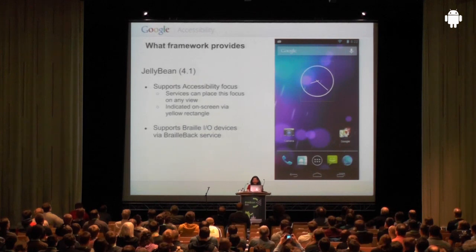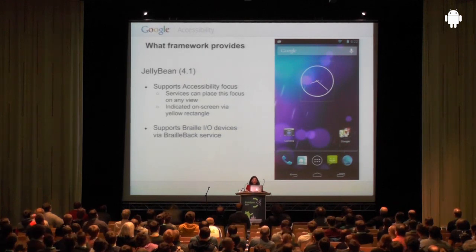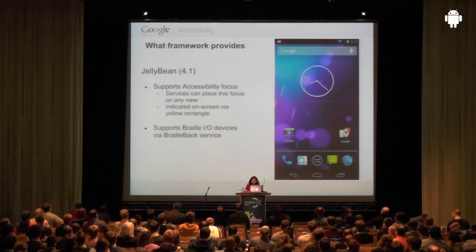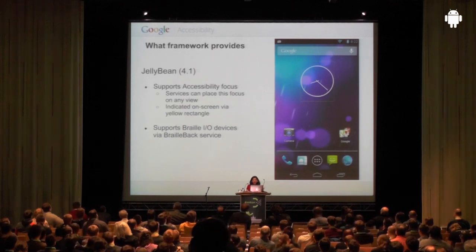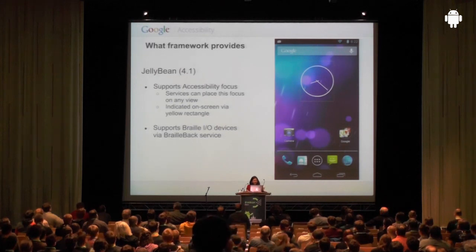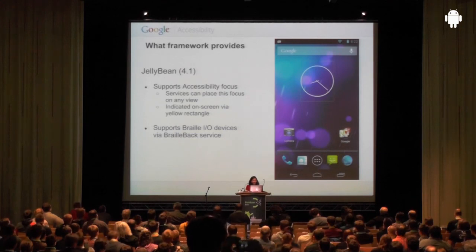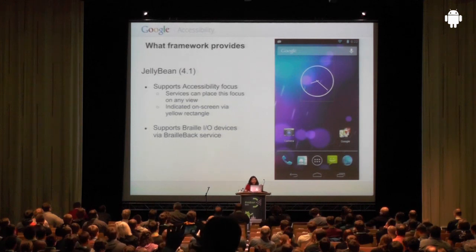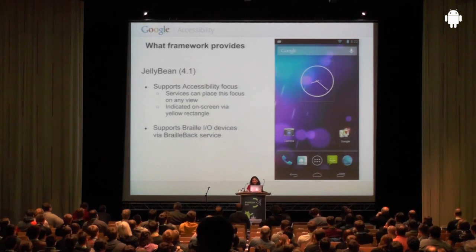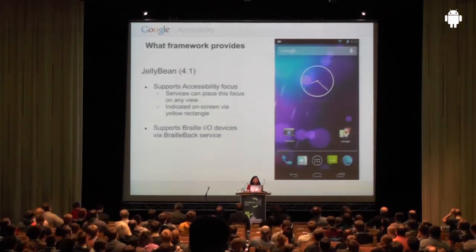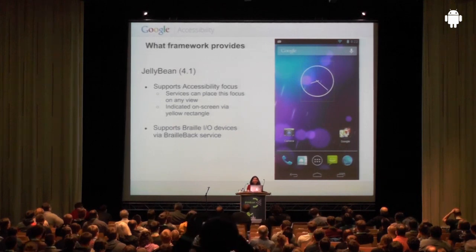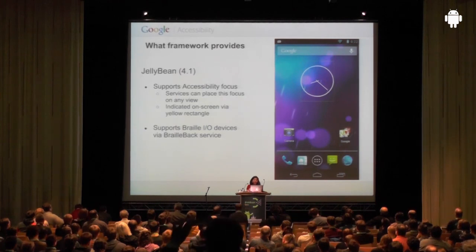Jellybean added a concept called accessibility focus — something like a cursor that can move around the screen, provided by the system to every view element. Previously you had to make elements focusable manually; going forward the system provides accessibility focus to all view elements automatically. A yellow rectangle shows the currently focused element. All accessibility events are then broadcast to all services. We also added a service called BrailleBack, allowing users to connect a Braille device and use it as both input and output.